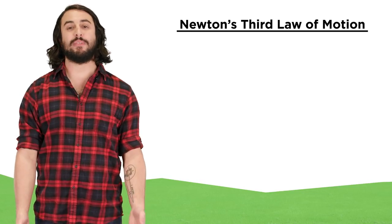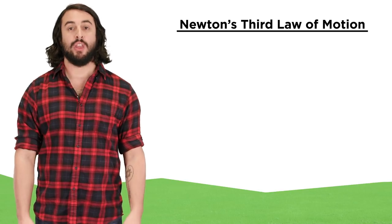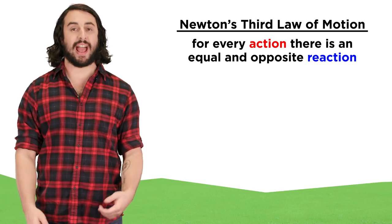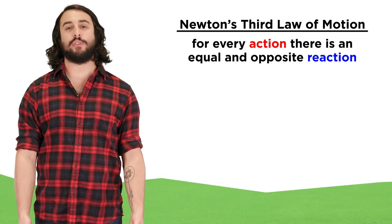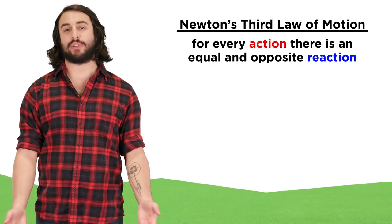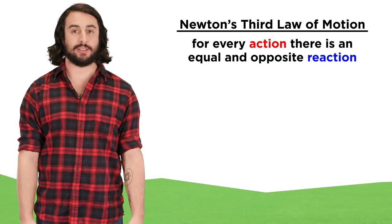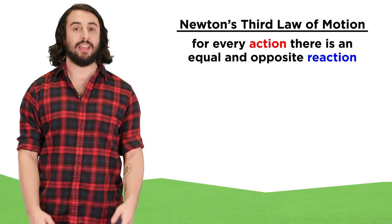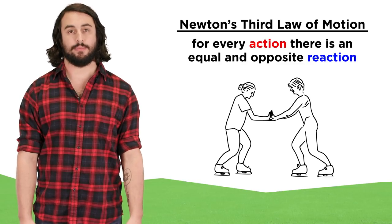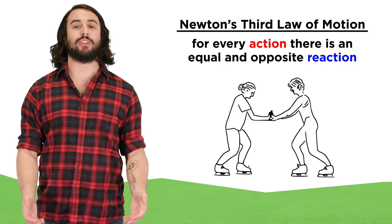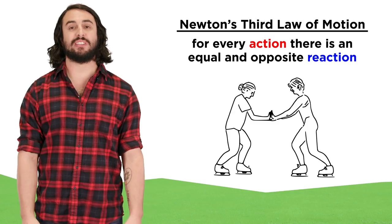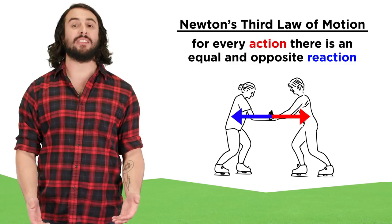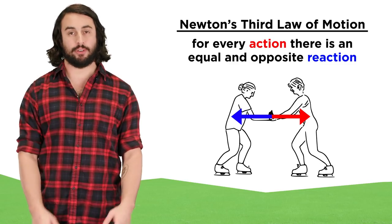This is most famously stated as follows: for every action there is an equal and opposite reaction. While this is often quoted out of context for metaphorical purposes, in physics it means something specific and quantitative. It means that if two objects interact, the forces they impart on each other will be equal in magnitude and opposite in direction.